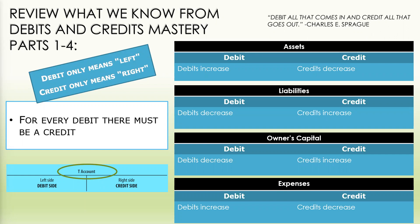What we already know is that debit only means left and credit only means right. For every debit, there must be a credit. For the T account, the left side is the debit side, while the right side is the credit side. We also know that we will debit all that comes in and credit all that goes out.